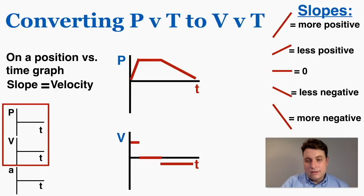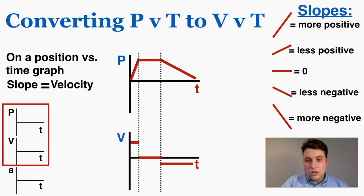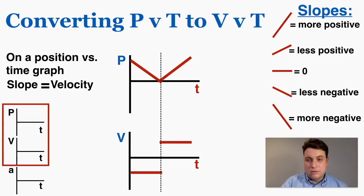That would be how I translate the velocity graph from the position graph. We often draw vertical lines to help see similar times on both graphs — each vertical line corresponds to the same time on both, so you know when a graph is changing. If I have a position graph where the slope is negative and constant, then becomes positive and constant, that's what the velocity graph would look like as well.